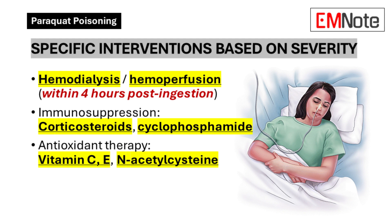Specific interventions. Therapeutic options beyond supportive care remain limited and controversial. Extracorporeal elimination via hemodialysis or hemoperfusion may be considered in early presentations, ideally within four hours of ingestion. Immunosuppressive therapy, typically combining corticosteroids and cyclophosphamide, has been employed in attempts to mitigate inflammatory pulmonary injury, though with inconsistent results. Antioxidant therapies, including vitamin C, vitamin E, and N-acetylcysteine, have theoretical benefits but lack robust clinical evidence supporting their efficacy.